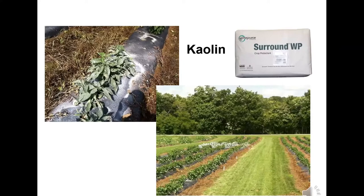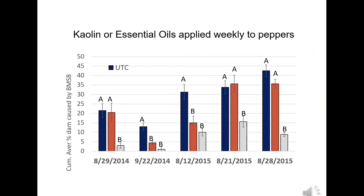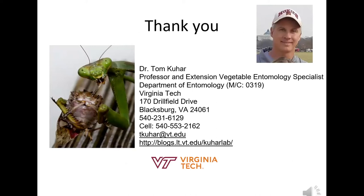What does work for organic growers is kaolin — a clay-based kaolinite powder that prevents sunscald and does not interfere with photosynthesis. Stink bugs don't like it, and many other insects don't like it either. Applied to peppers and tomatoes, you can reduce stink bug damage significantly. We've actually gotten control with kaolin applied weekly that's as good as some pyrethroid insecticides. The gray bars in the data are the kaolin, and we got significant reduction in stink bug injury with weekly applications. Organic growers can use that.